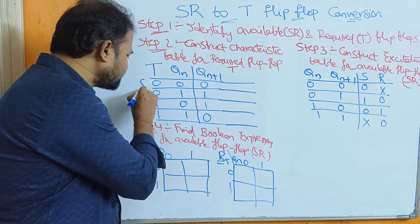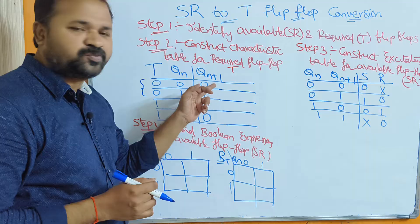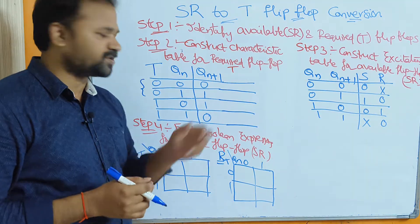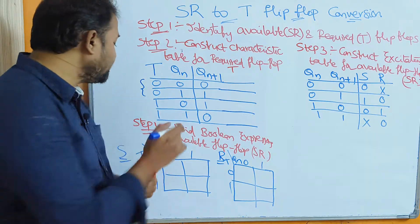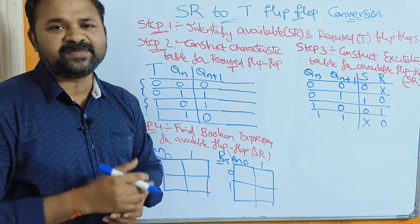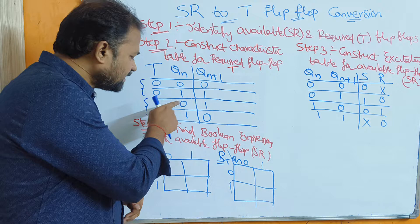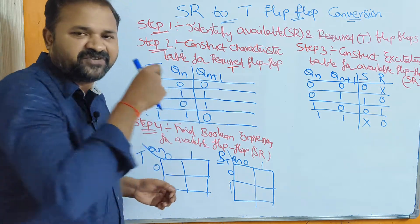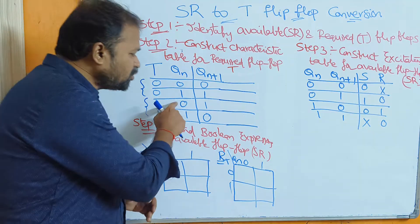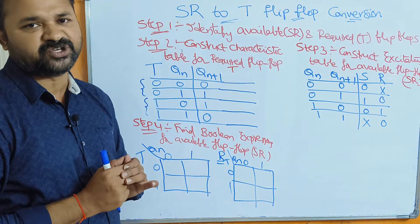In the first two cases, T value is 0, so the next state output Qn+1 equals the current state output: 0→0, 1→1. In the next two cases, T is 1, meaning toggle. The next state output will be the complement of the current state output: 0 toggles to 1, and 1 toggles to 0.